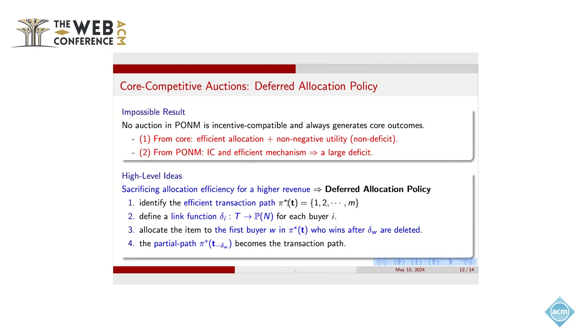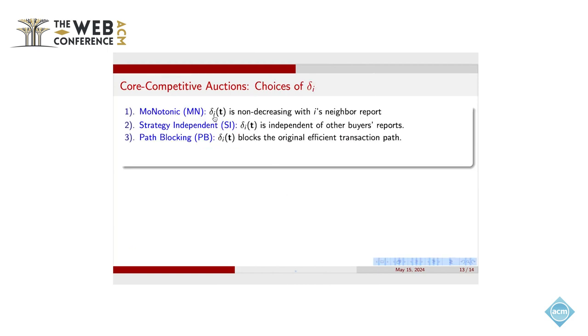That means we break this original path and then we allocate a new winner along this path. Of course, this new winner is not efficient compared to the winner in the original market. So the problem boils down to how to define this delta function.